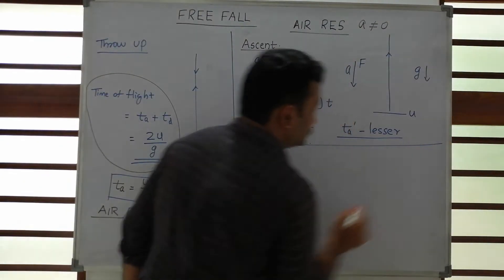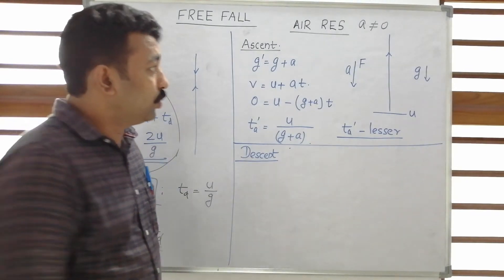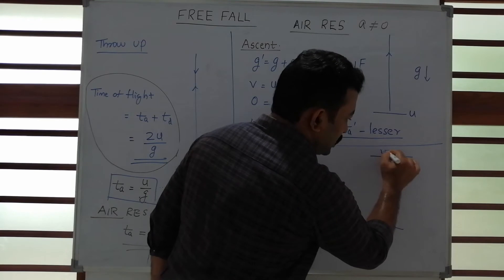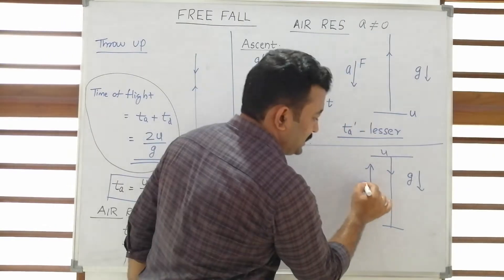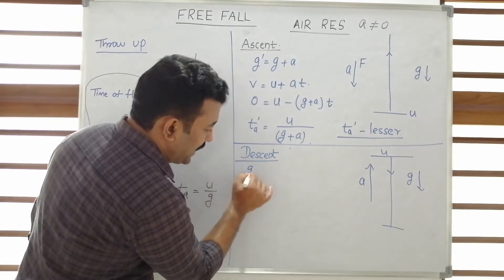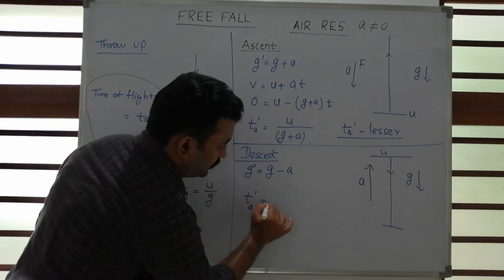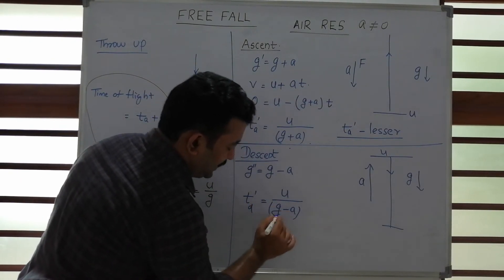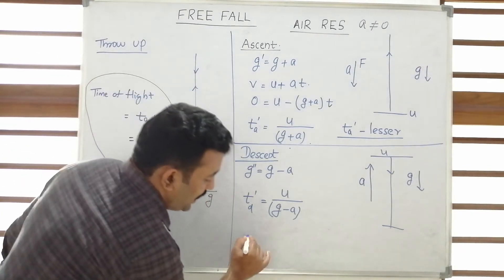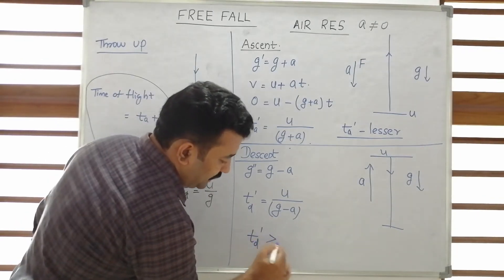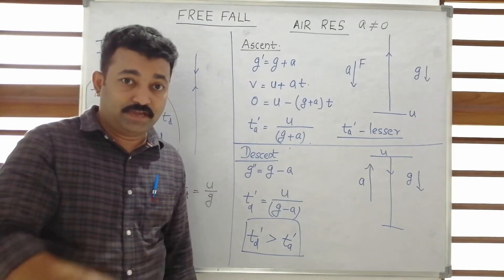During descending, the particle falls with gravity downward and air resistance upward, so the net acceleration is G minus A. The time of descent T_D' = u/(G minus A). Since G minus A < G, T_D' is greater. Therefore, when air resistance is considered, time of descent is greater than time of ascent.